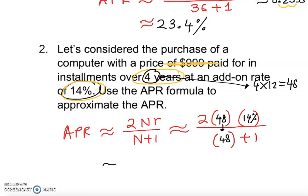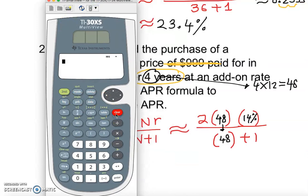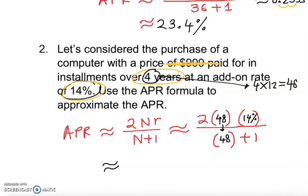Using the calculator, N over D: 2 times 48 times 14%, going down to 48 plus 1, enter. It gives you the fraction. We multiply by 100 to get 27.4%. The APR is 27.4%.